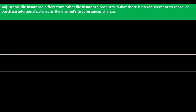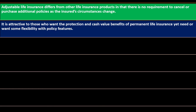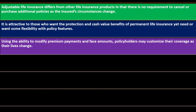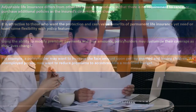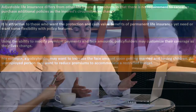Adjustable life insurance differs from other life insurance products in that there is no requirement to cancel or purchase additional policies as insurance circumstances change. It is attractive to those who want the protection and cash value benefits of permanent life insurance, yet need or want some flexibility with policy features. For example, a policyholder may want to increase the face amount upon getting married and having children, or an unemployed person may want to reduce premiums to accommodate a restricted budget.